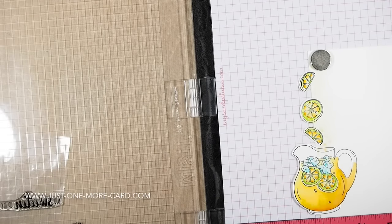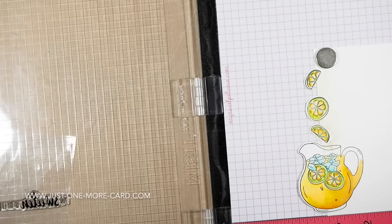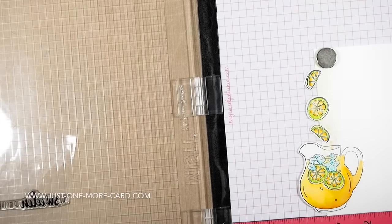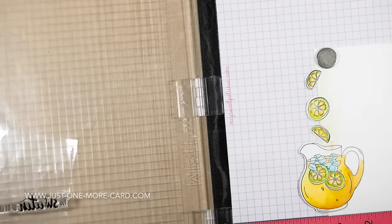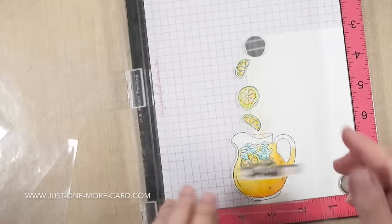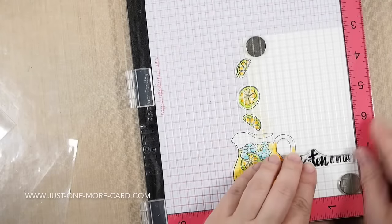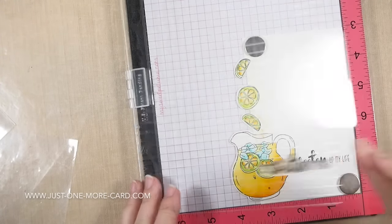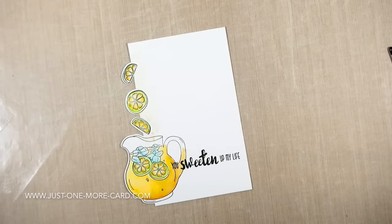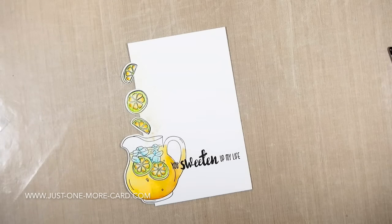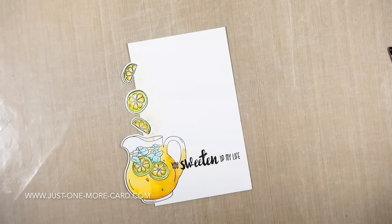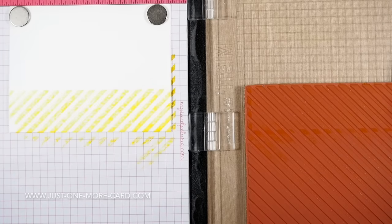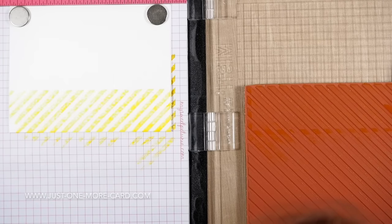I almost used my regular acrylic block for the sentiment because I was like 'yes, the sentiment, let's just quickly do it,' and then I was like 'wait, you bought the MISTI exactly because you always mess up the sentiment. Don't be lazy now, just use the MISTI for the sentiment.' It was perfect on the first attempt, but I just had to laugh because I just wanted to work around what I had actually bought the MISTI for, which seemed so silly.